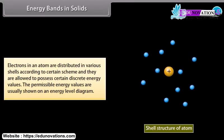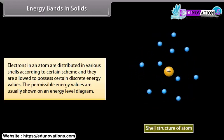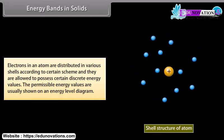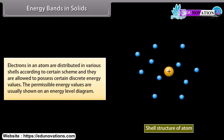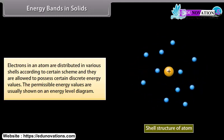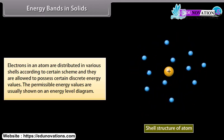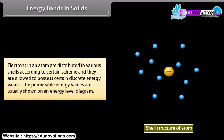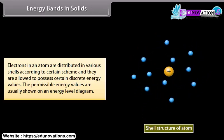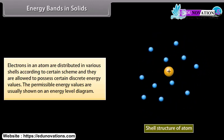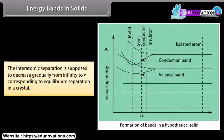Energy bands in solids: Electrons in an atom are distributed in various shells according to a certain scheme, and they are allowed to possess certain discrete energy values. The permissible energy values are usually shown on an energy level diagram. We consider the formation of bands for the energy level normally occupied by the valence electrons and the next level above it. The interatomic separation is supposed to decrease gradually from infinity to R, corresponding to equilibrium separation in a crystal.